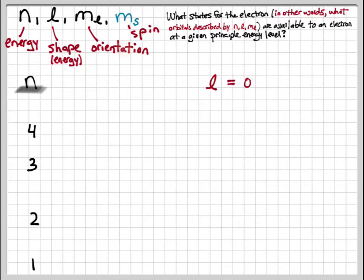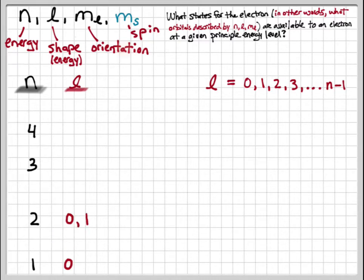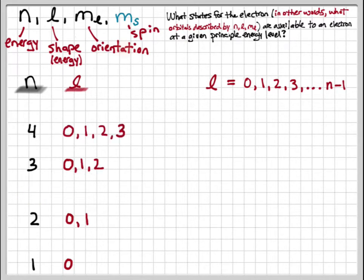The value of l, the shape of the orbitals, is dictated by the principal quantum number n. l can take on values from zero to n minus one. At the first energy level, you have only one possible l value: l equals zero. At n equals 2, we have two possible values: zero and one. At level three we have zero, one, and two, and this increases as we go to level four and up.